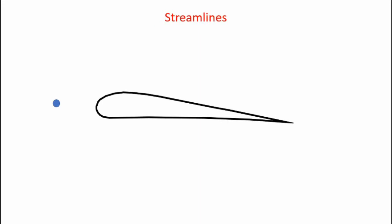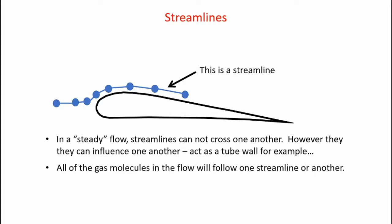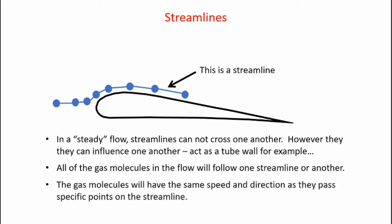Now let's apply the continuity equation and Bernoulli's principle to the flow over an airfoil. First, we need to understand the concept of streamlines. A streamline traces the path of a particle as it moves over an object. In a steady flow, streamlines cannot cross one another but they can influence one another, acting like the walls of a tube. All gas molecules in the flow will follow one streamline or another, and have the same speed and direction as they pass each specific point along the streamline.